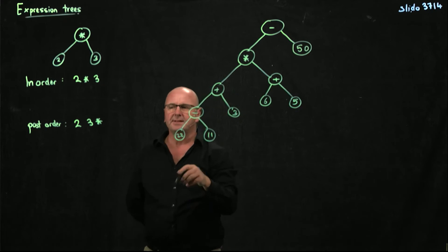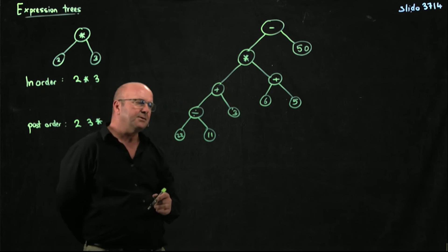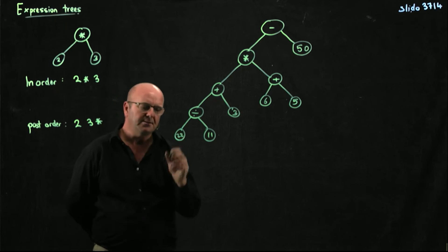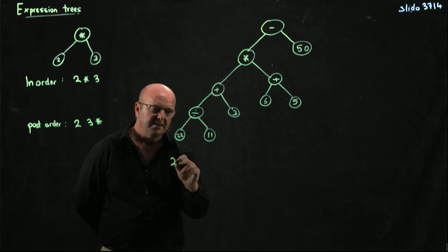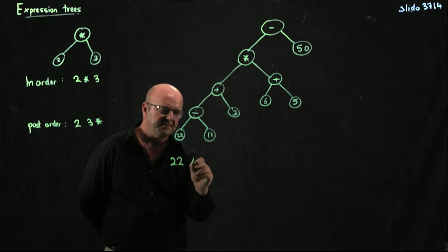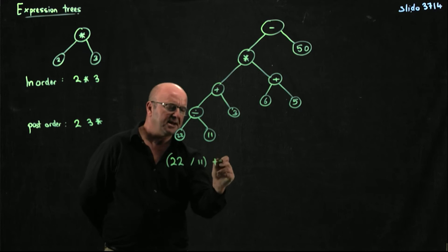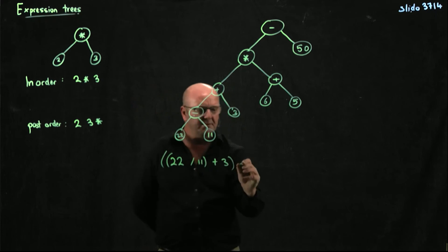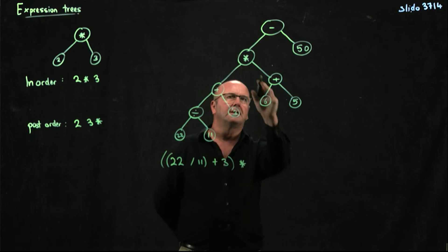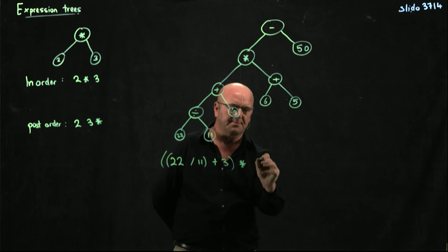Now if I go through that tree, for example, in order, the way that I would write this is I would say it's 22 divided by 11. And I'm going to do that first. And then I'm going to add 3. And then I'm going to multiply that.